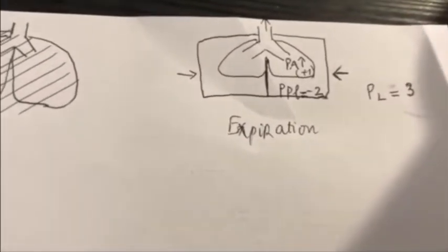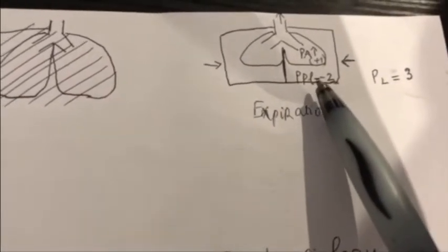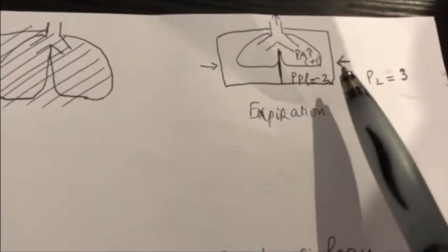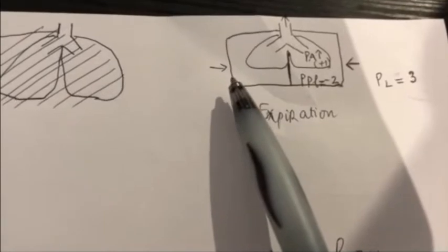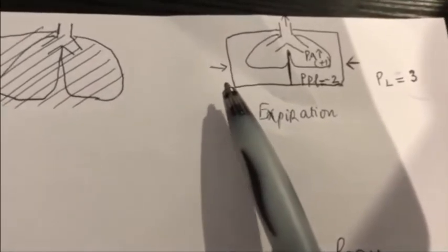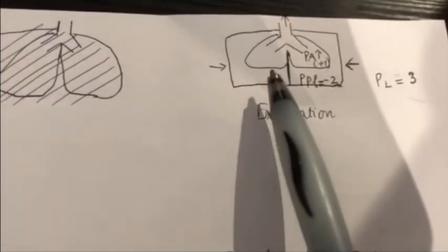Similarly, during expiration, you have all those pressures. The pleural pressure in this case will also be negative. But the difference would be because the chest wall, this is a passive process, right? So during the expiration, the muscle went back to its normal shape, and so the chest size decreased.